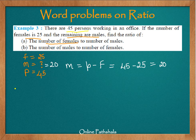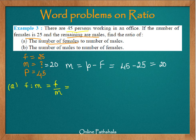Now let us find ratio A, which is the ratio of F to M — the number of females to the number of males, also written as F by M. The number of females is 25 and the number of males is 20, so we have 25 by 20, or the ratio is 25 is to 20.